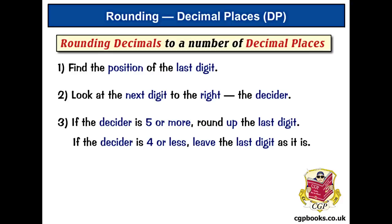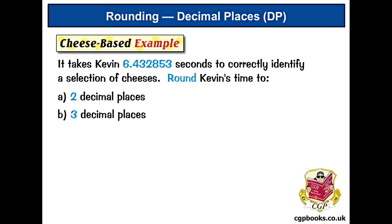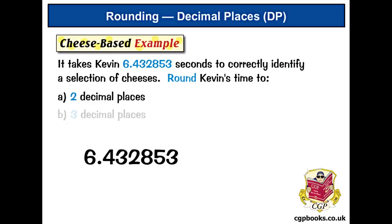Let's see just how good these rules actually are with a nice cheese-based example. It takes Kevin 6.432853 seconds to correctly identify a selection of cheeses. Round Kevin's time to: a) 2 decimal places, and b) 3 decimal places. So let's start with part a — we want the rounded number to have 2 decimal places, so the last digit is the 3. I'll circle that.